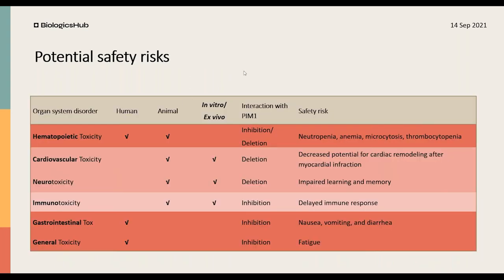In the end, we summarize all this information and build the safety risk summary. The safety risk summary is organized by organ system and ranked based on the weight of evidence. On screen is an example of a safety alert we generated for PIM-1, which is a serine/threonine kinase target. We report the toxicity for each organ system, the source of information — whether human, animal, in vitro, or ex vivo — the type of modulation such as inhibition, deletion, or activation, and the specific safety risk reported for that modulation and organ system.